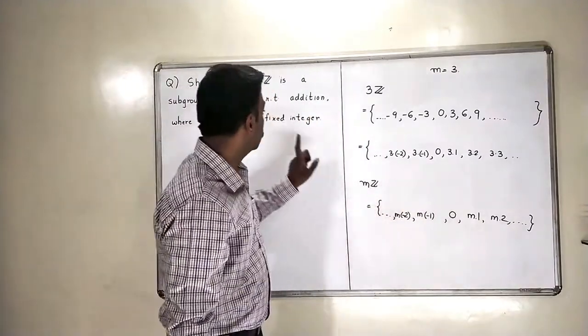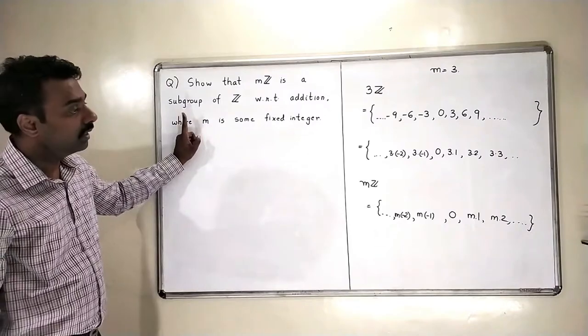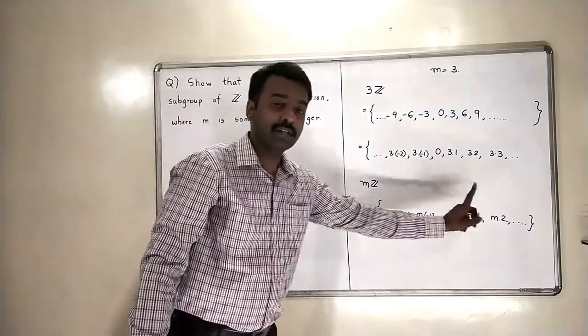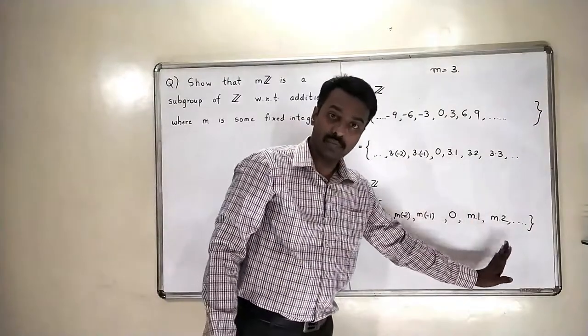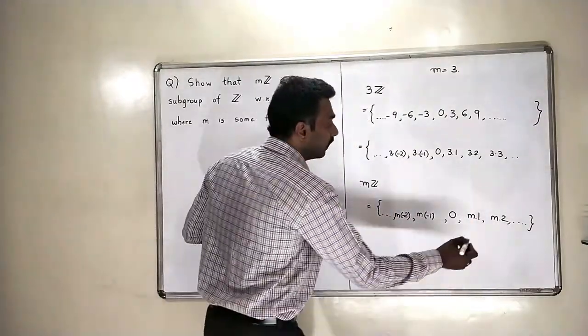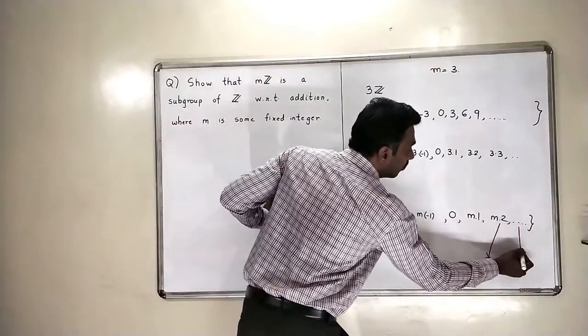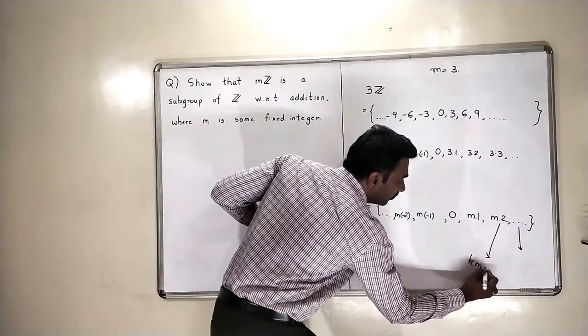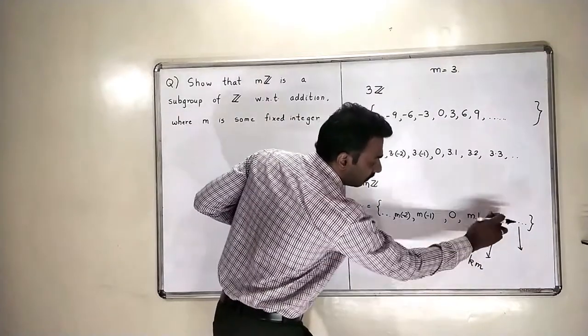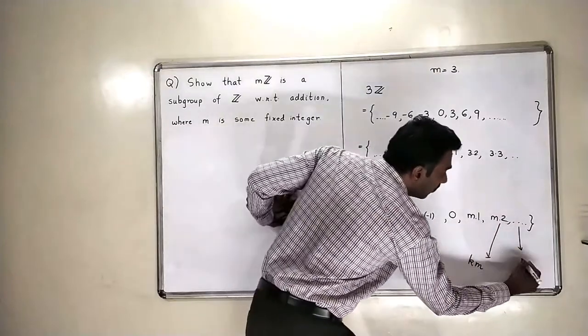So, for the closure, if I want to check this as a subgroup, the first thing is closure. I will take any two elements from this set. Now, how do any two elements of this set look? So, I will take arbitrarily, I will pick some two elements and the first element will look like k times m, where k is some integer, m is our fixed integer.